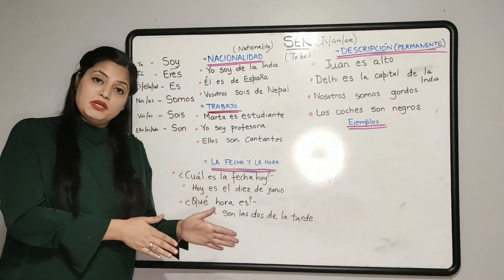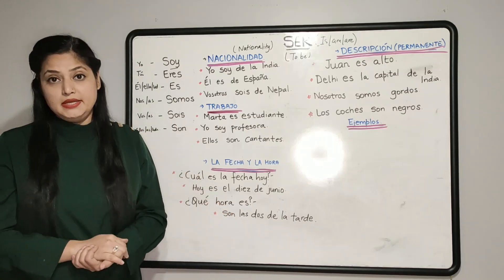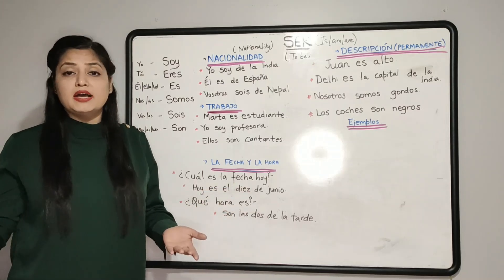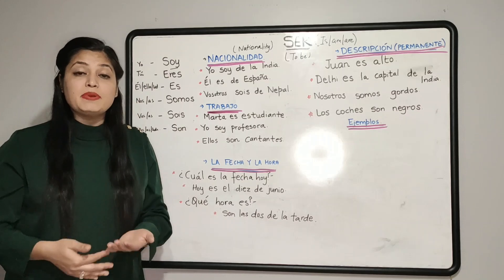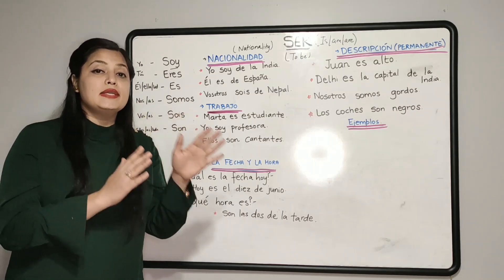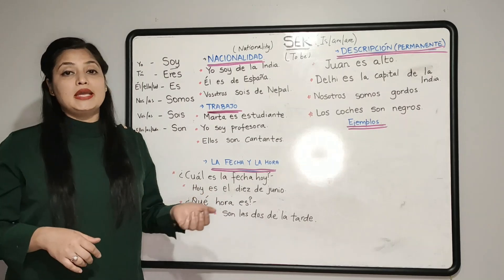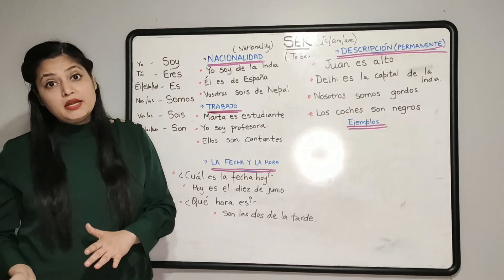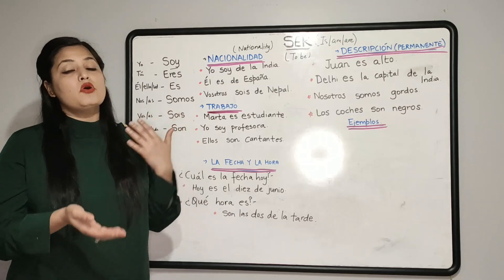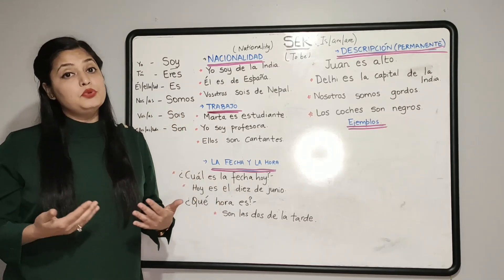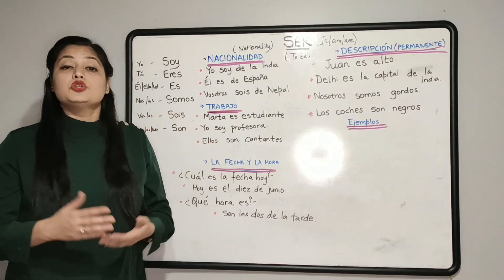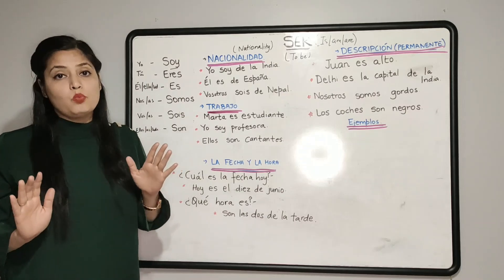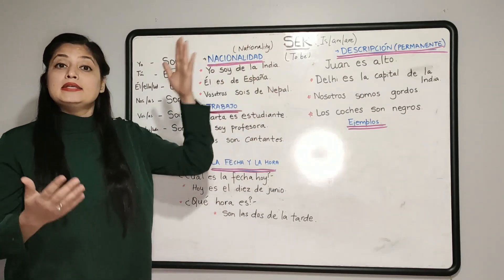For example, if I tell you to conjugate the verb 'hablar' which means 'to speak' — which we have done so many times — you know it is a regular verb. Similarly, 'comer' is a regular verb, 'vivir' is a regular verb, because we have practiced them so many times. Similarly, for irregular verbs also, the more you use them and practice them, the easier it is for you. So starting with our series of irregular verbs in the present tense, let us do an extremely important verb in Spanish today which is 'ser'.